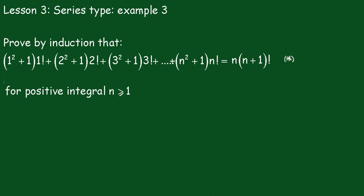Lesson 3, Series Type Example 3. Prove by induction that 1 squared plus 1 times factorial 1, plus 2 squared plus 1 times factorial 2, plus 3 squared plus 1 times factorial 3, all the way up to n squared plus 1 times factorial n, is equal to n times (n+1) factorial, for positive integral values of n greater than or equal to 1. We start with n equals 1.